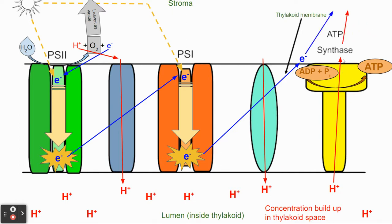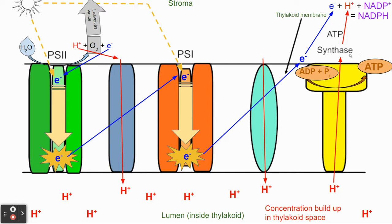Now hydrogen is outside of the thylakoid space — it's inside the stroma. Hanging outside in the stroma, it needs something to do. This electron and this hydrogen are going to find a molecule called NADP⁺. NADP⁺ is oxidized at the moment — it doesn't have an electron. But when we combine an electron, the hydrogen, and the NADP⁺, we create another reduced molecule called NADPH.